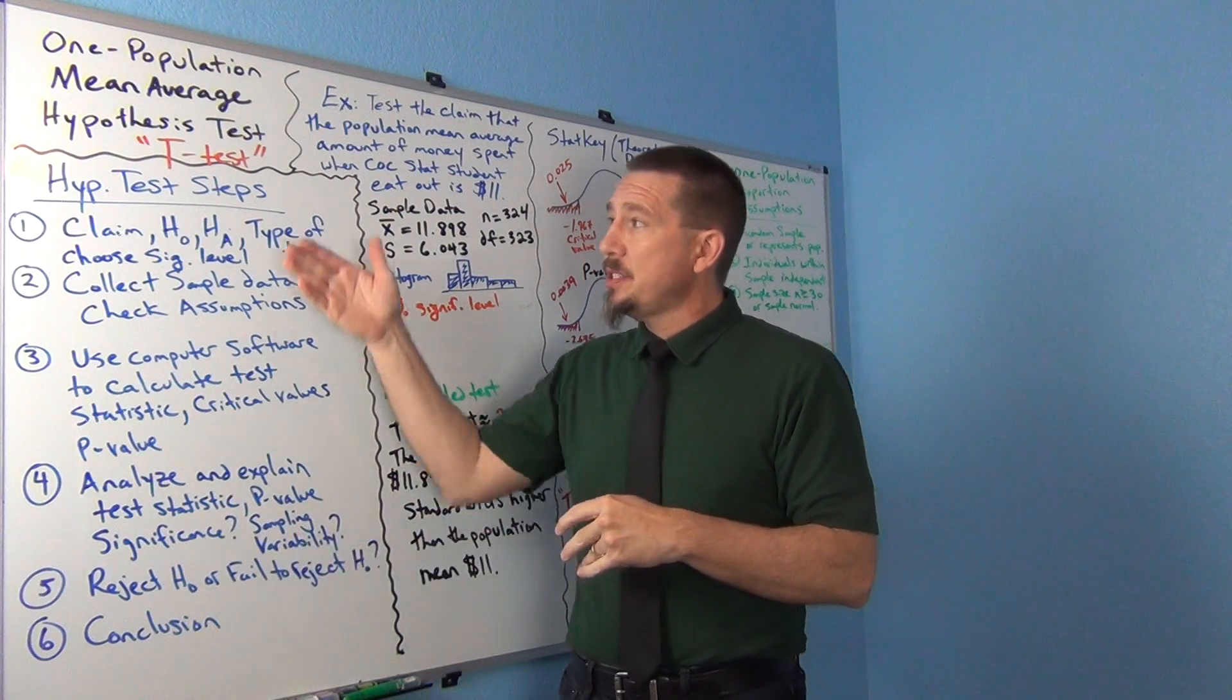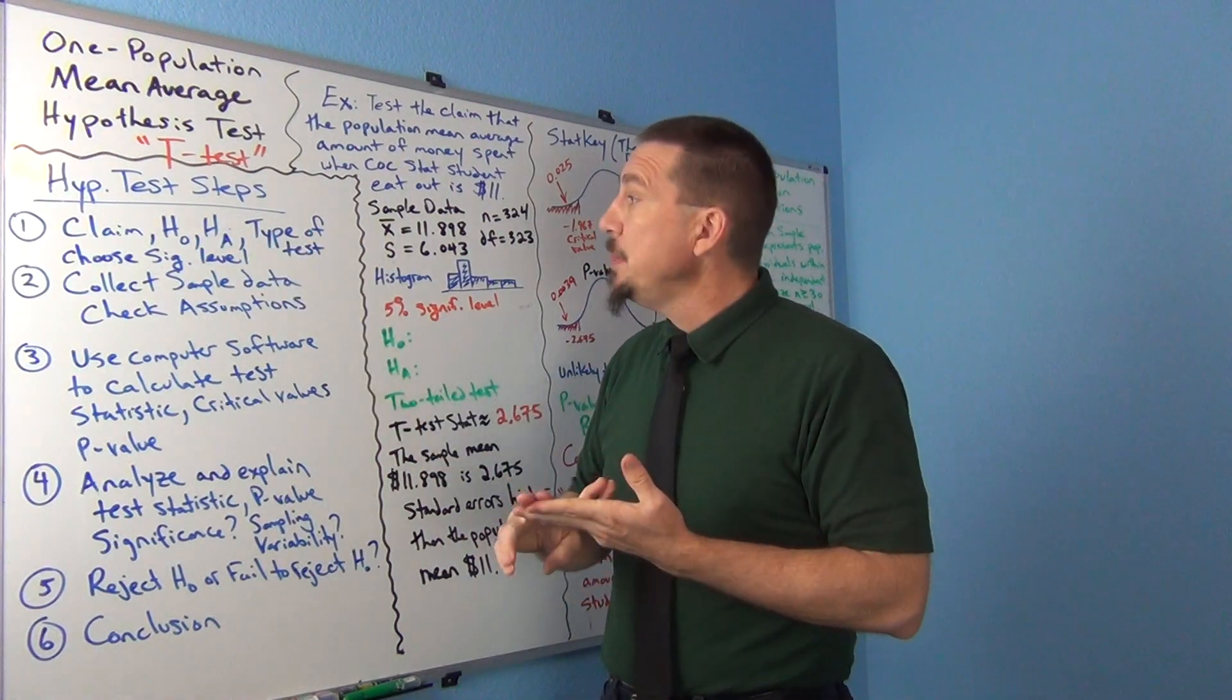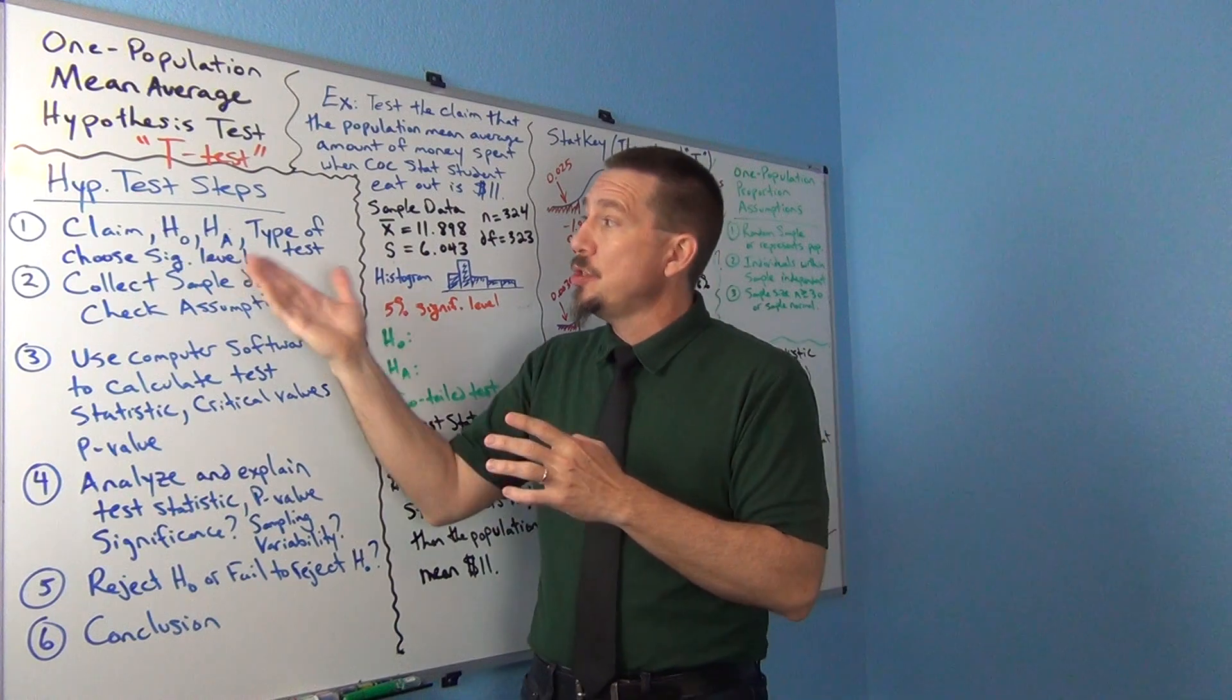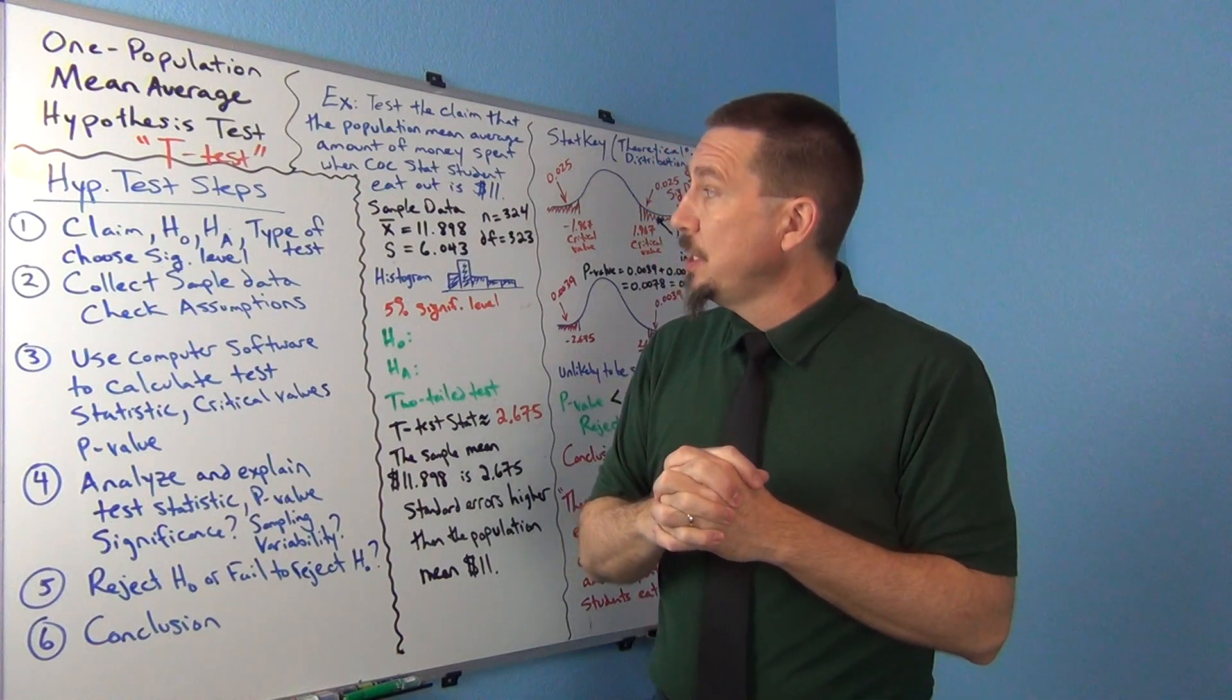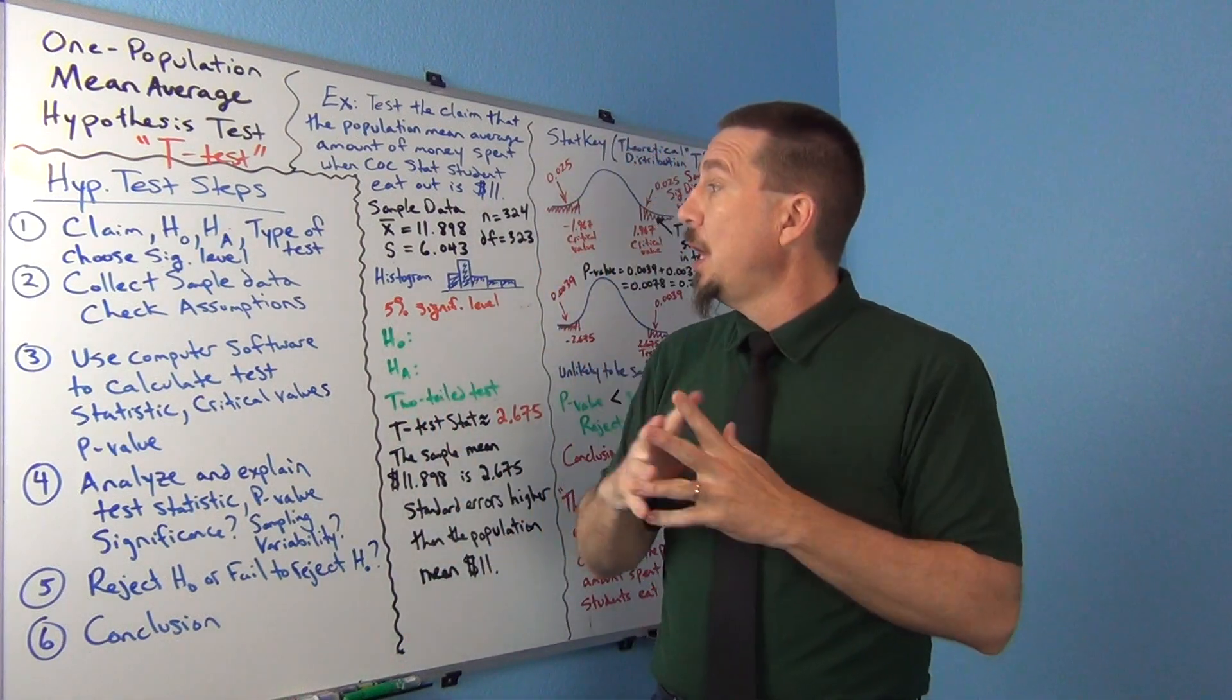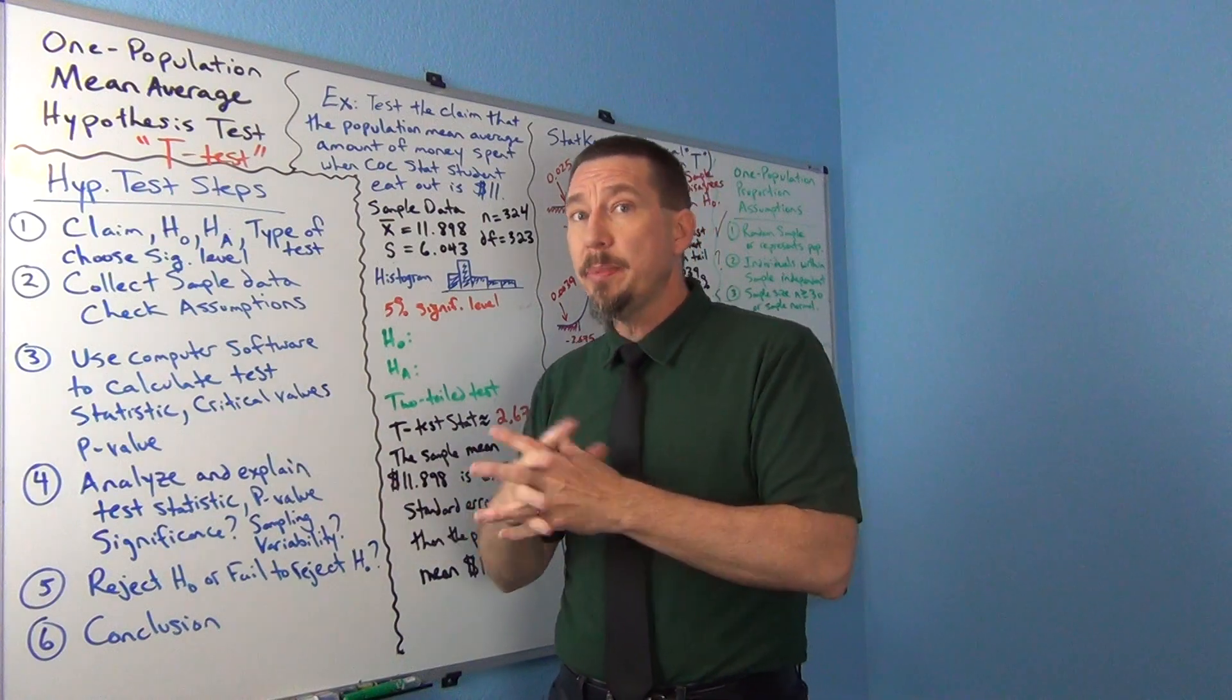So let's review a little bit of stuff we've been going over. The steps to doing a hypothesis test: we want to figure out what the claim is, what the null hypothesis H0, alternative hypothesis HA, what type of test are we doing. We should also choose a significance level. We talked about type 1 and type 2 errors and how to choose significance levels. We want to collect our sample data and make sure our sample data meets assumptions to do the test. Is the data relatively unbiased and do we think it's representative of the population.